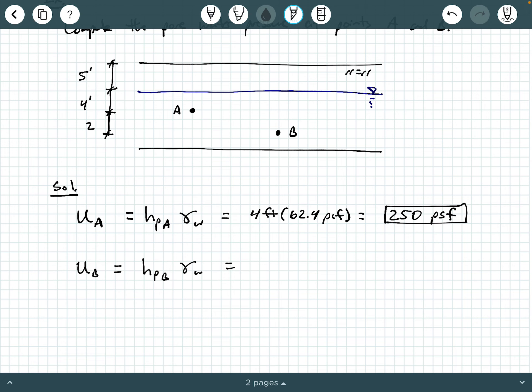It's 6 feet. And then we're going to say times 62.4 PCF. And we punch that into our calculator and we get 374.4, but just at 3 sig figs, 374 PSF.